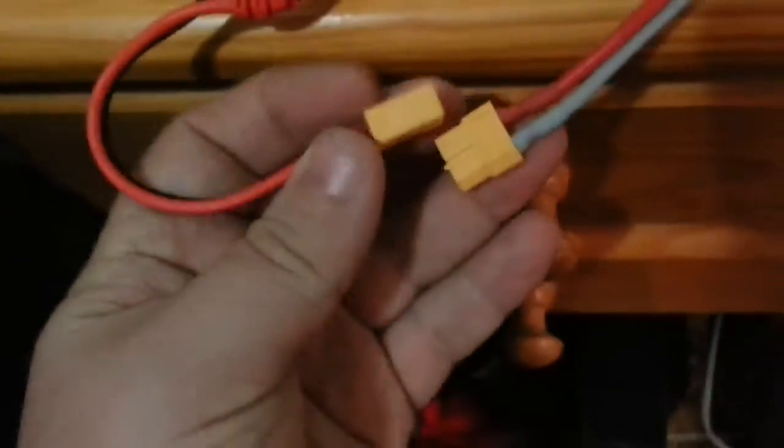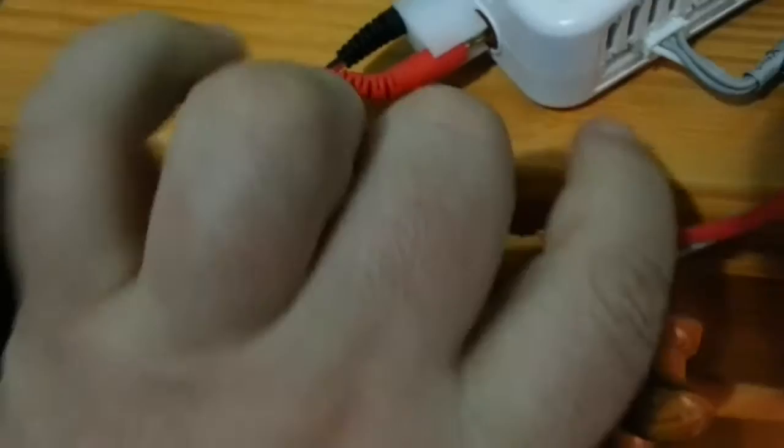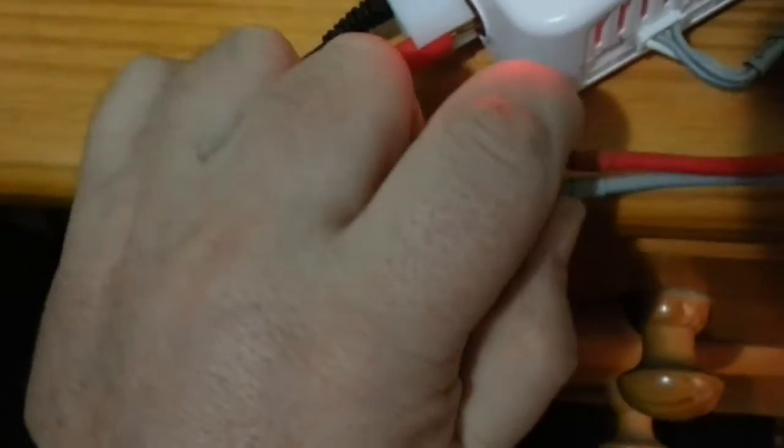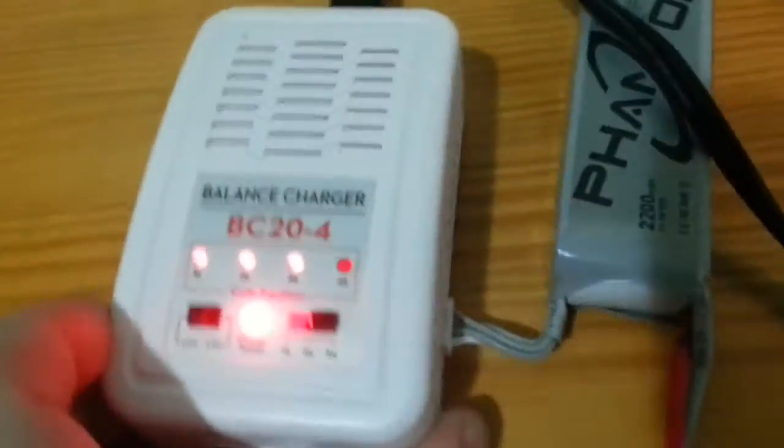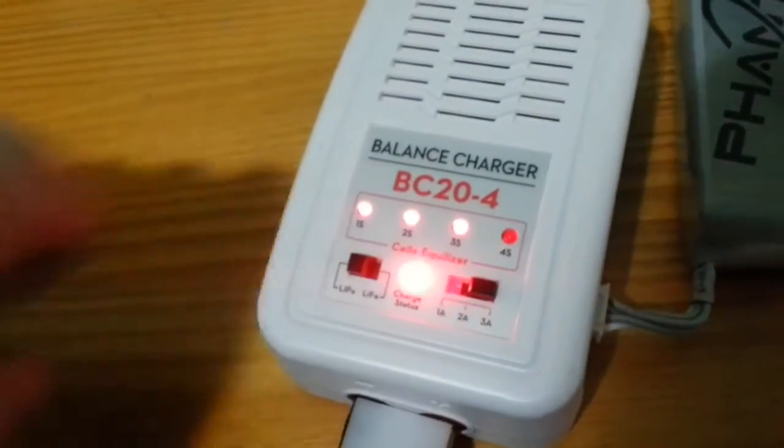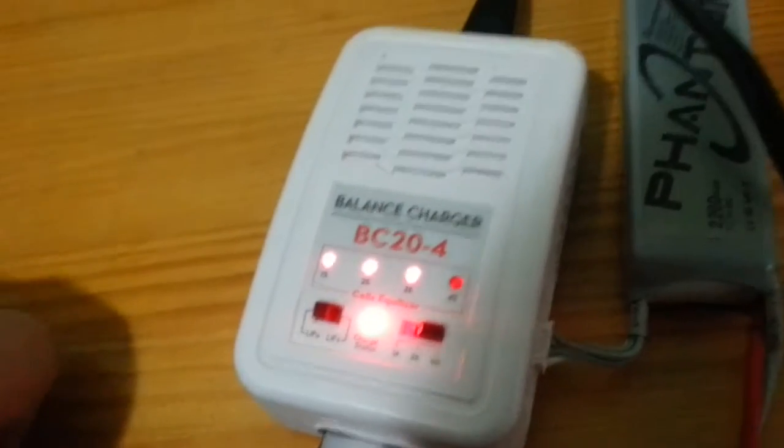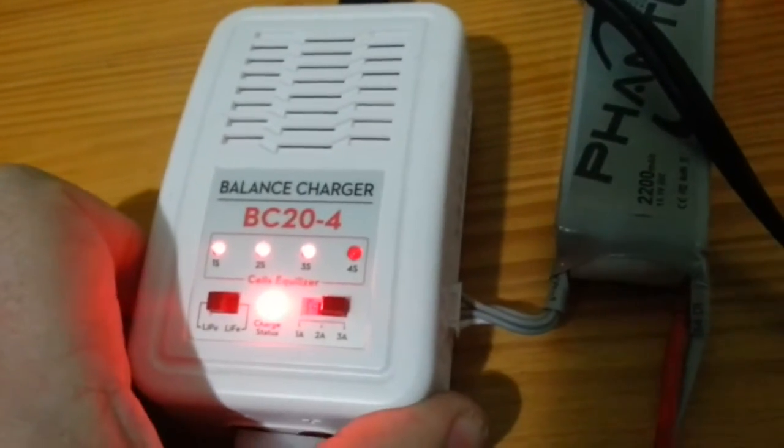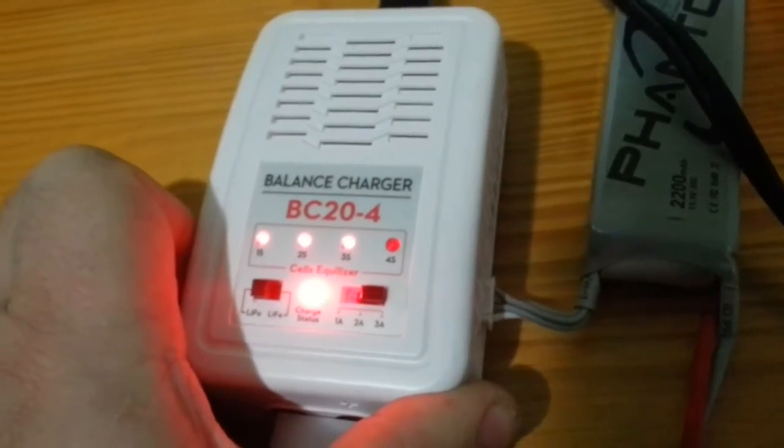So what we'll do now is just connect the power leads up. And it's charged up to 3S. Now, I assume that's actually saying it's charged, which is why it's flickering away.